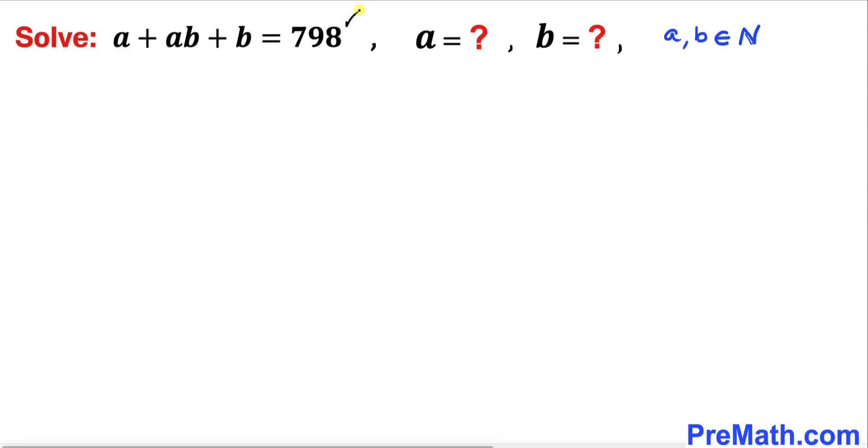Let's focus on this equation. Let me copy it down: a plus a times b plus b equals 798. Now let me manipulate this equation by adding one on both sides. On the left hand side we can see that a is in common between these first two terms.